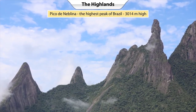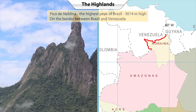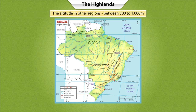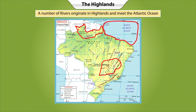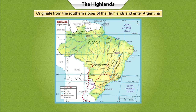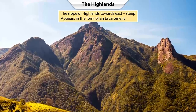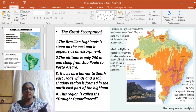Pico de Neblina, the highest peak of Brazil at 3014 meters, lies on the border between Brazil and Venezuela. The altitude of the Brazilian Highlands to the east and south is more than 1000 meters, while other regions range between 500 to 1000 meters. Rivers originating in the highlands head north to meet the Atlantic Ocean. The major rivers — Uruguay, Paraguay, and Parana — originate from the southern slopes and enter Argentina. The slope towards the east is steep, appearing as an escarpment.